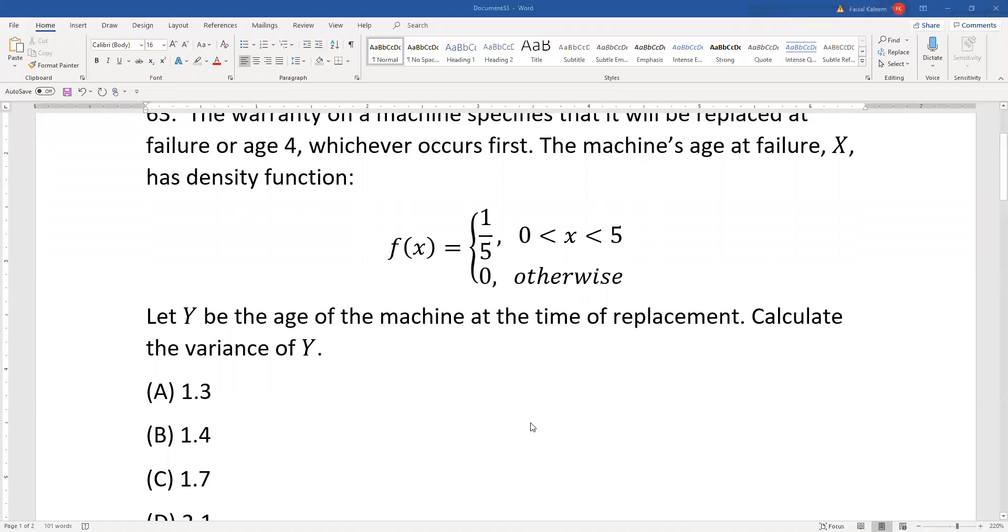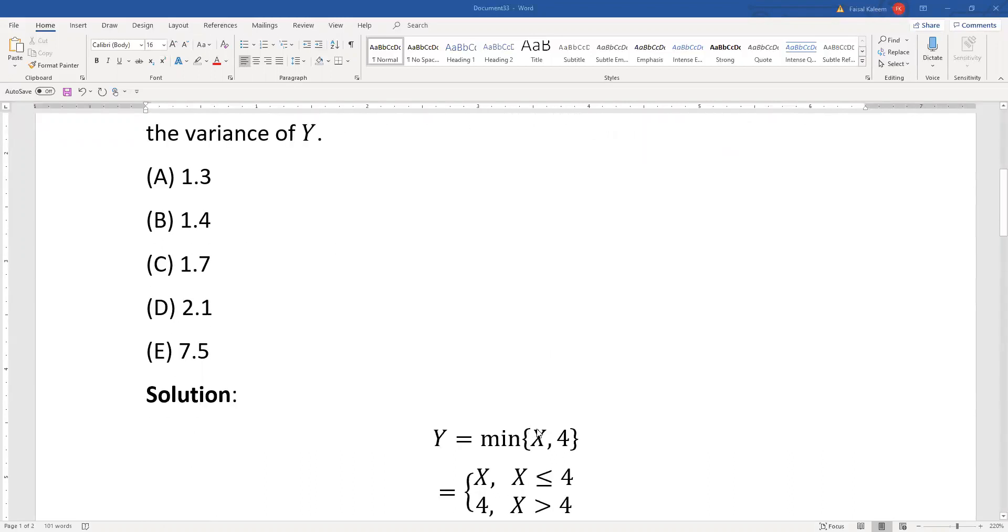If it fails at 2 years, it will be replaced at 2. So 2 is the minimum of 2 and 4, and it definitely is replaced at 4. If it crosses 4, it will be replaced at 4 then.